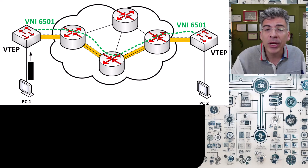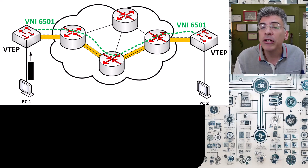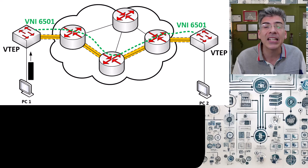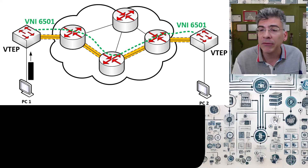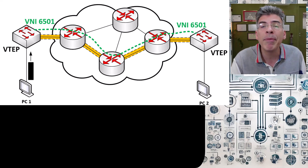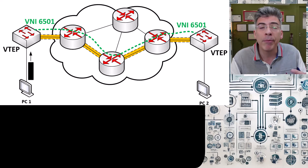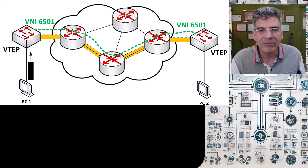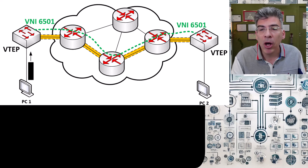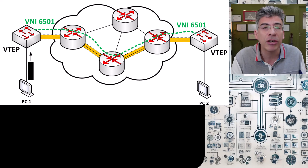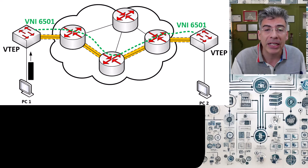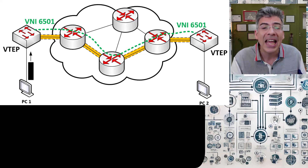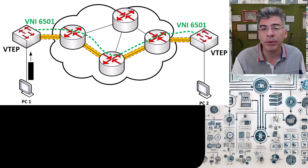Just a note before we go on: if you haven't already done so, take a look at my video about VXLAN control plane operations, which will give you a general overview of the control plane for VXLAN. If you're not familiar with multicast topologies, don't worry — I'm not going to get into the details of multicast configuration, at least not in this video. But I will describe how multicast operates so that you can understand how it's used in the VXLAN control plane.